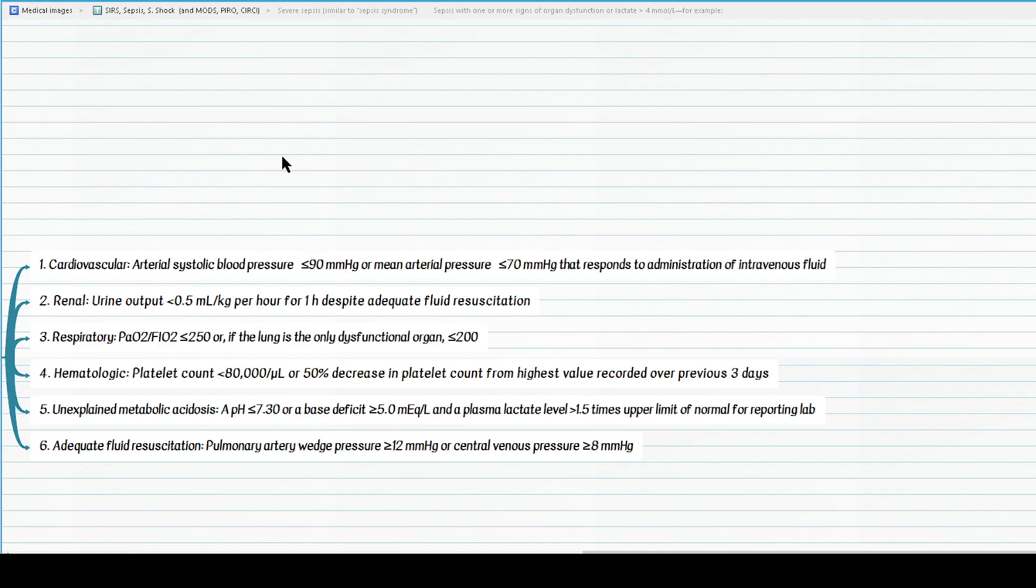If a patient pH is less than 7.30, or if the patient has more than 5 mEq per liter base deficit, or if a patient has a plasma lactate level more than 1.5 times upper limit of normal, or as we mentioned, more than 4 mEq per liter, this patient meets the acidotic criteria for severe sepsis.